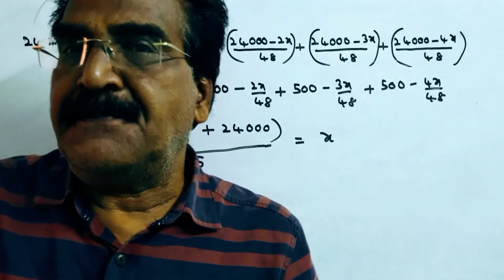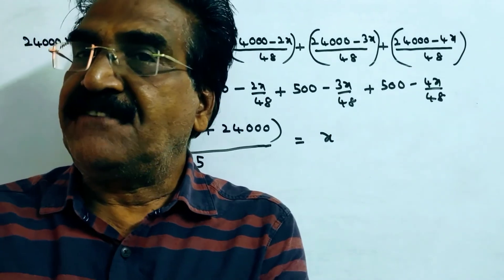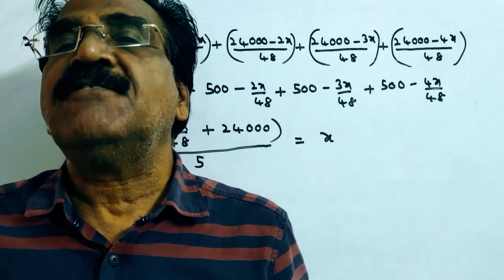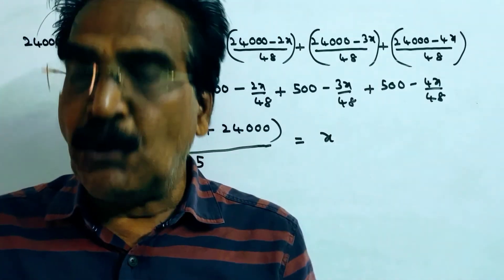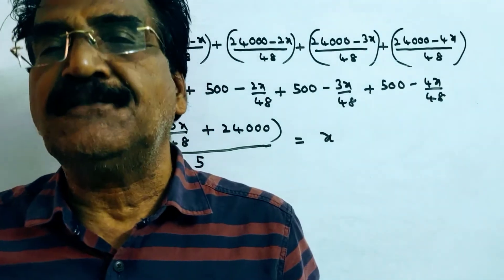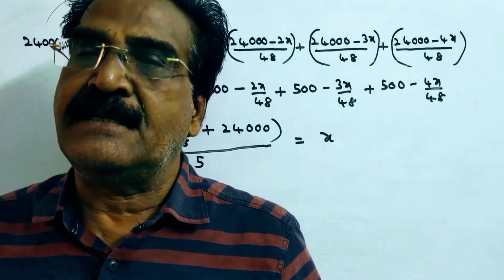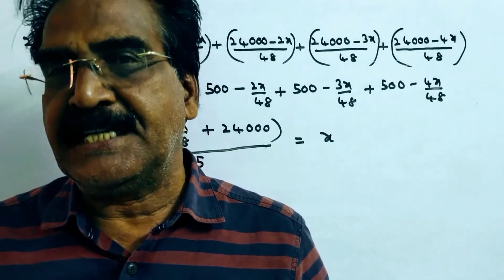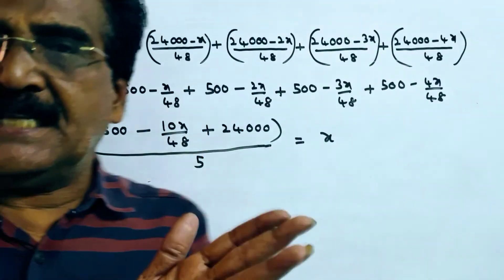A scooter is being sold at Rs. 65,000 cash, or Rs. 41,000 cash down payment with the remaining Rs. 24,000 in 5 monthly installments at 25% simple interest. What is the monthly installment?